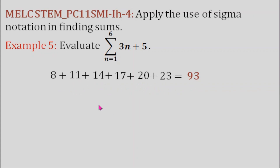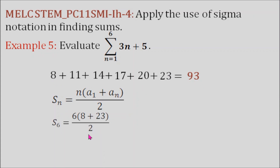We have the arithmetic series formula: S sub n equals n times the quantity a sub 1 plus a sub n, all over 2. Substituting n with 6 because there are six terms, a sub 1 with 8, and a sub n with 23, we get: sum equals 6 times the quantity 8 plus 23, all over 2. This is still equal to 93.